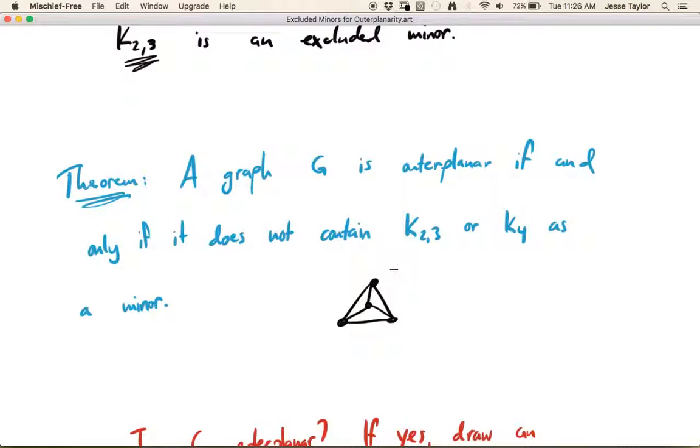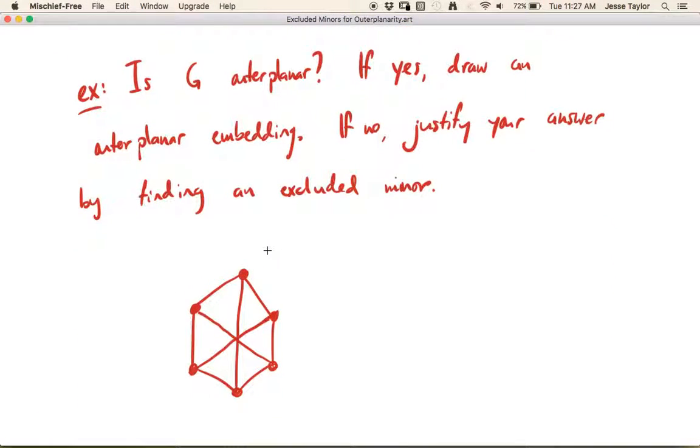So let's see how you use one of these results. This is our equivalent to Wagner's theorem, which says a graph is planar if and only if it doesn't have K5 or K33 as a minor. And now we get this result which says it's outer planar if and only if it doesn't have K23 or K4 as a minor. So this is what a problem might look like if you're trying to use one of these results. Is the following graph outer planar? If it is, draw an outer planar embedding. Proof by picture is fine if the answer is yes. But if the answer is no, you have to justify your answer by finding an excluded minor. So we know the excluded minors that we're looking for in this case are K23 or K4.